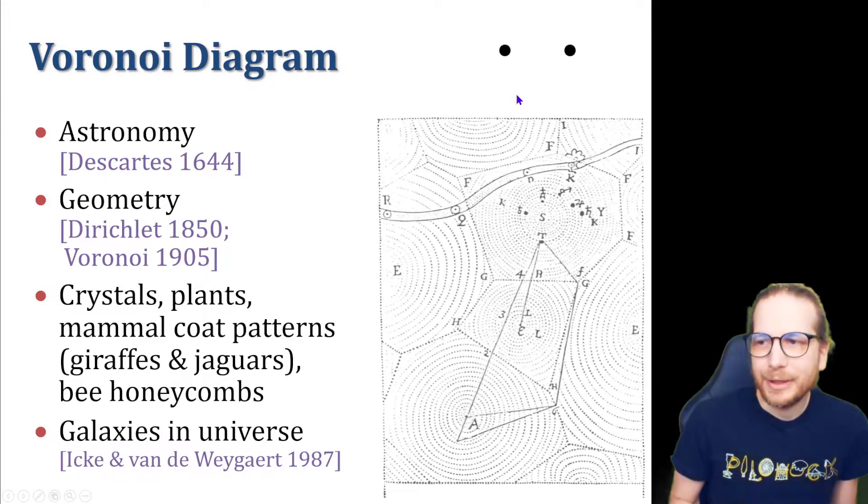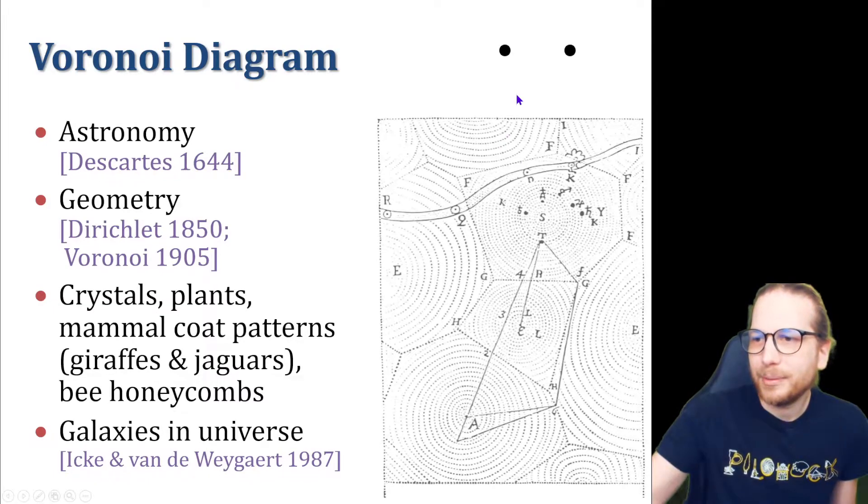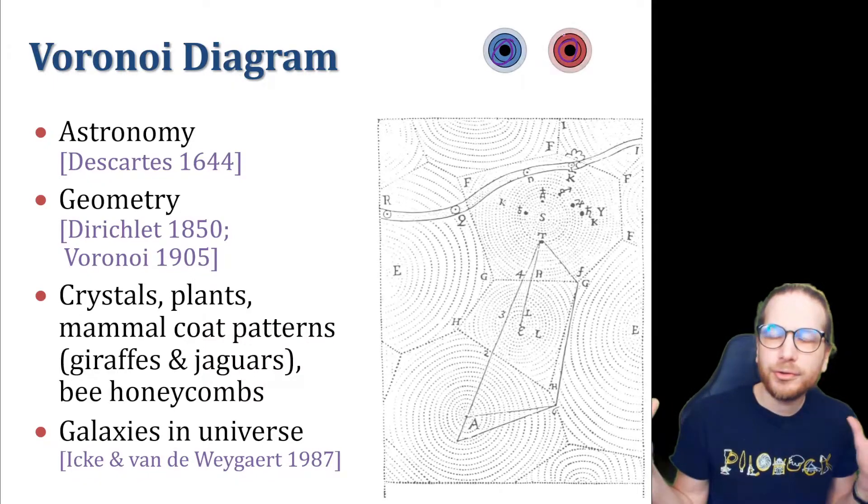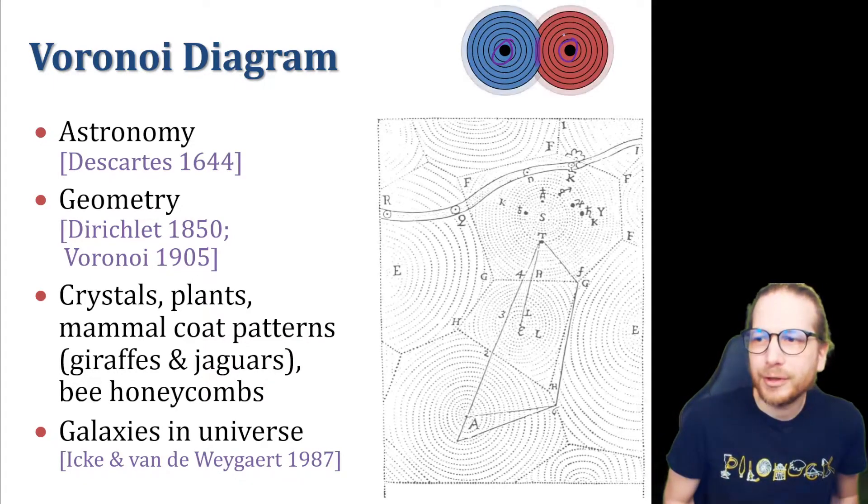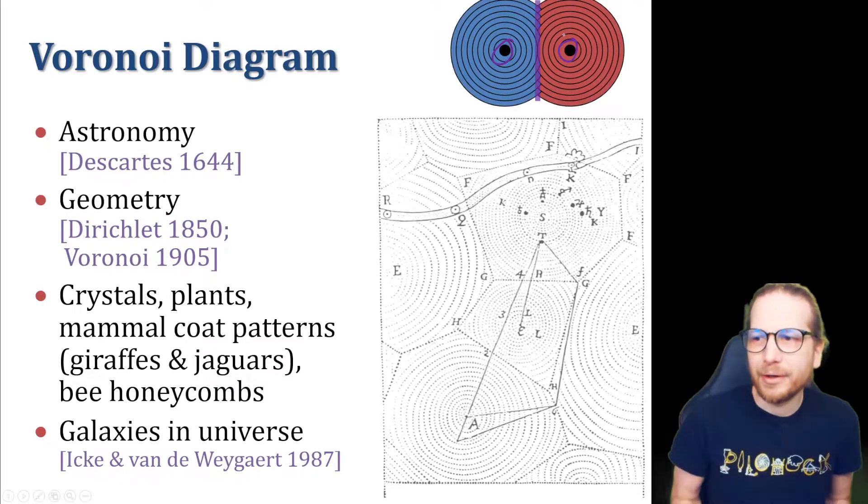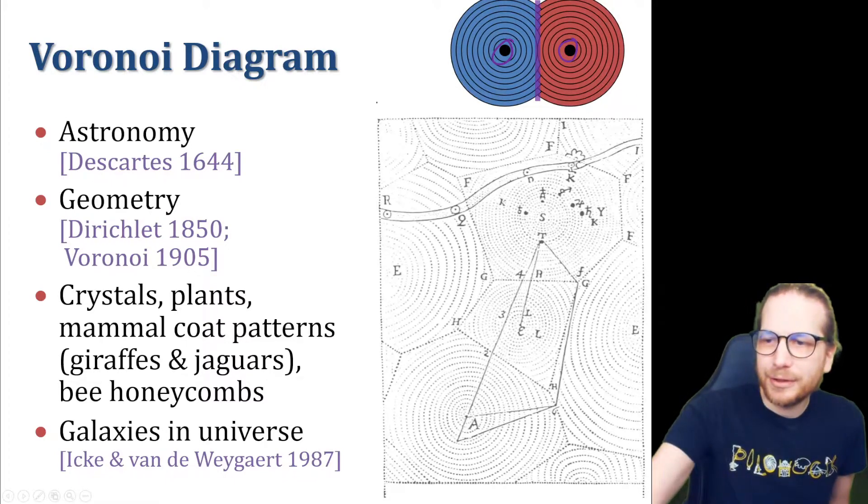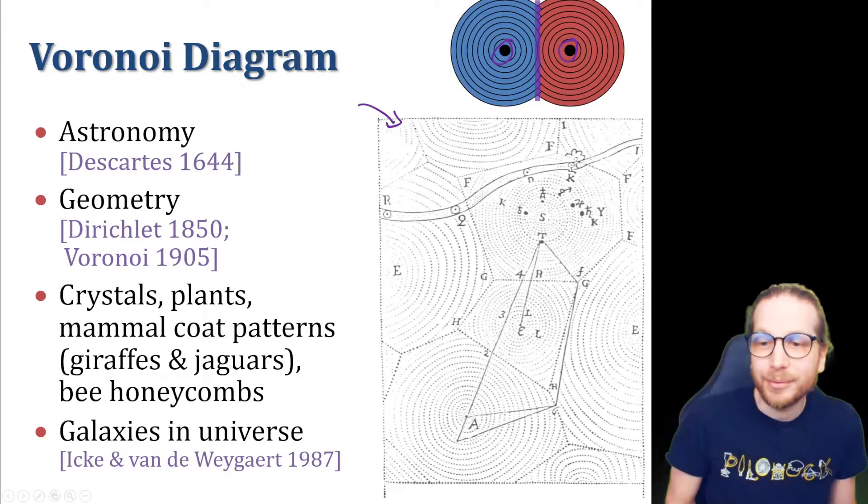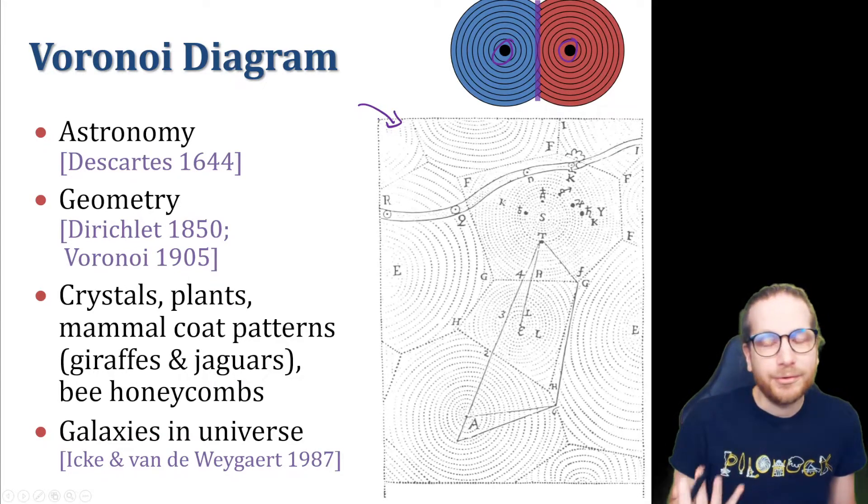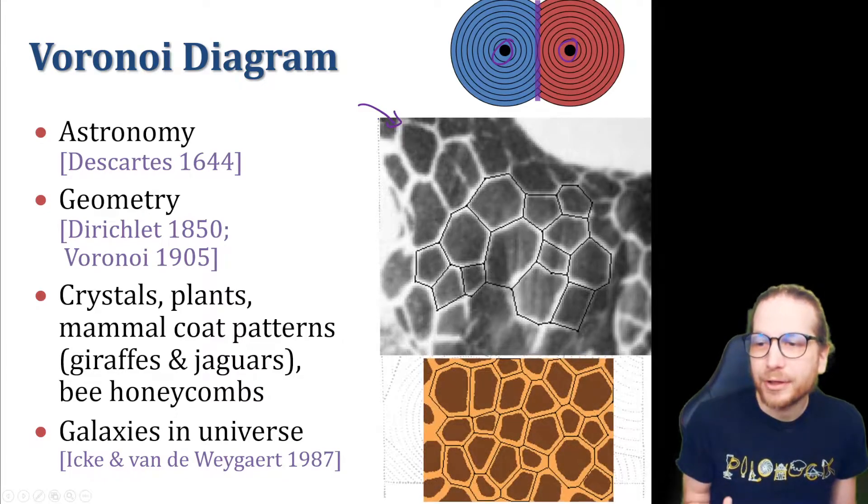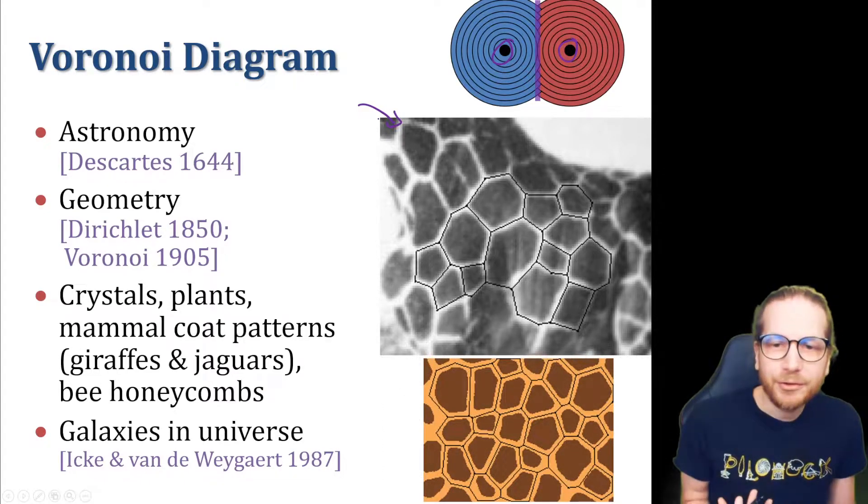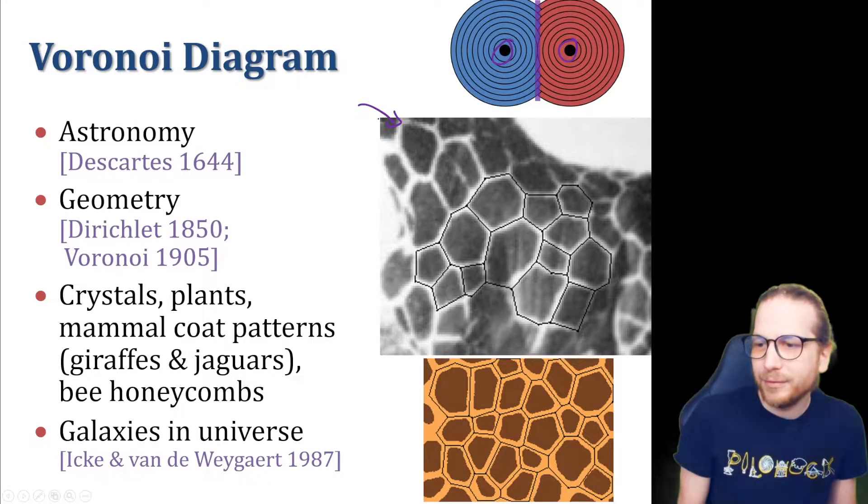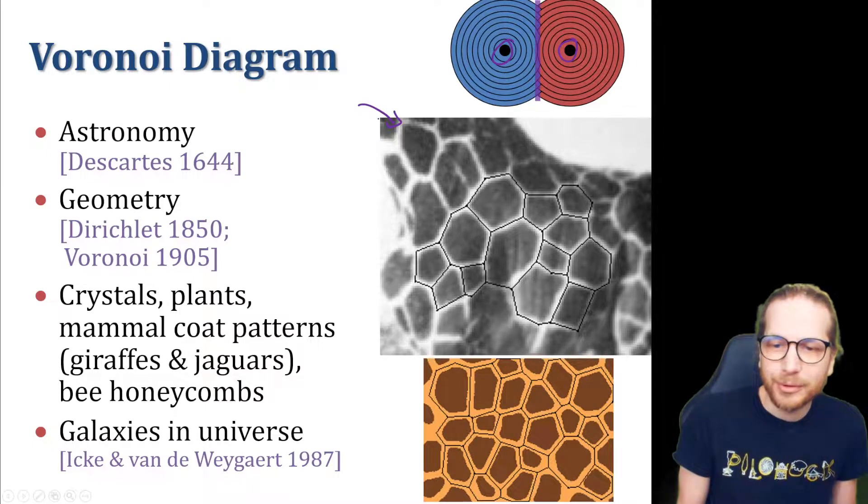So Voronoi diagrams, you may know. The basic concept is you start with some dots, like these two, and you grow circles around them. And where those circles intersect, that's the Voronoi diagram, that purple line. And you can see here a very early example of an approximate Voronoi diagram by Descartes from 1644. They're used a lot in geometry. They naturally occur in some biological phenomena where you have growing patterns on the surfaces of giraffes, zebras, and so on.